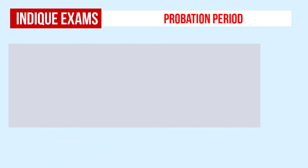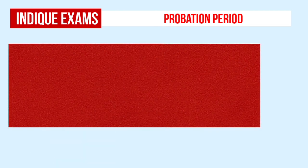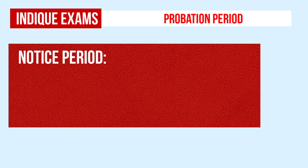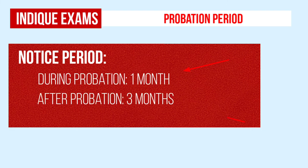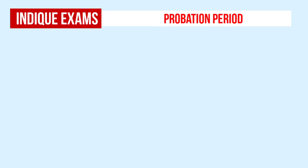Fourth, in case of an employee wishing to resign, the notice period is generally 1 month during probation, as against 3 months after that.